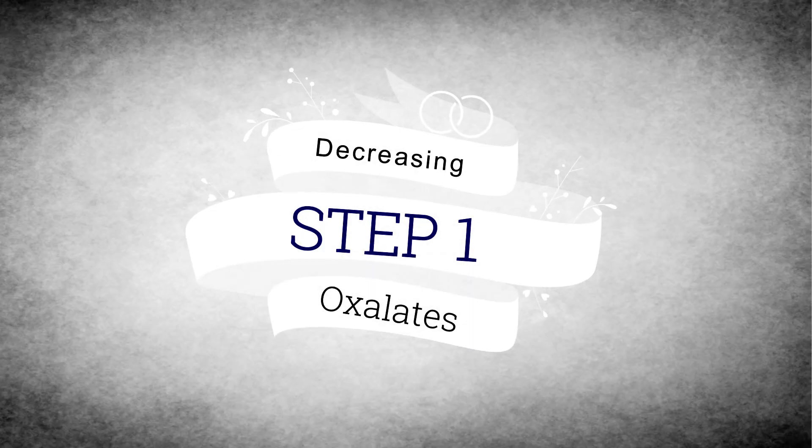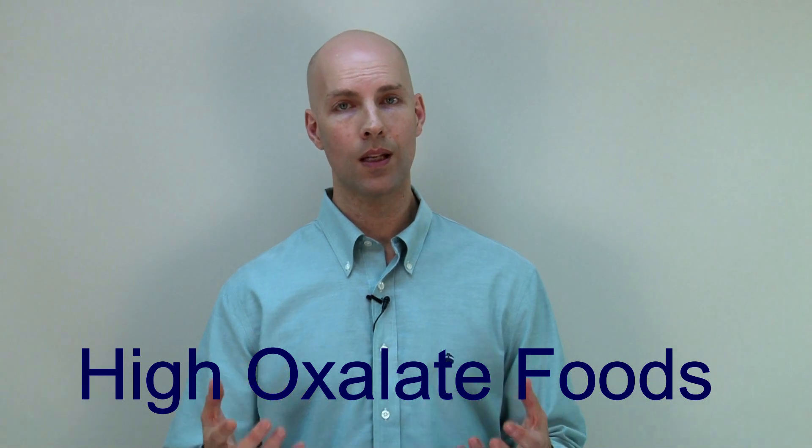The first step is you have to reduce high oxalate foods in your diet. Some of the common ones we talked about in the last video: spinach is common, berries are common, nuts are common. You can check online, and if you look at my blog I actually have a link to high oxalate foods — it's a list so you can see which ones are in your diet and start minimizing, reducing, and eliminating these foods. That's step number one.